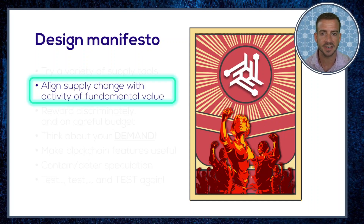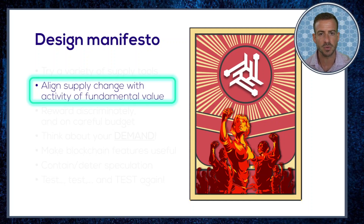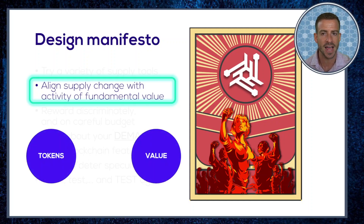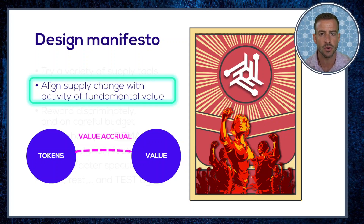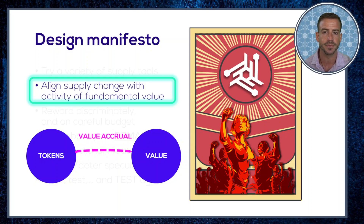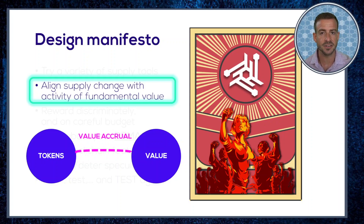Value accrual deals with an important implicit assumption that's doing some work here. In order for this relationship between token supply and fundamental value to be relevant in the first place, we need some kind of link between our tokens and the pool of resources that is being created or funneled through our blockchain economy.